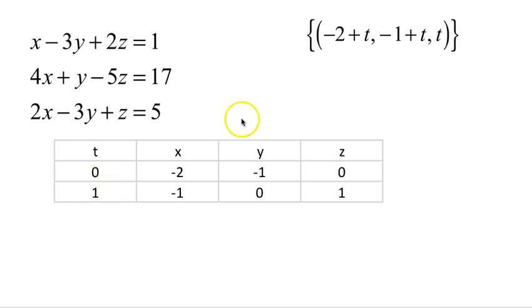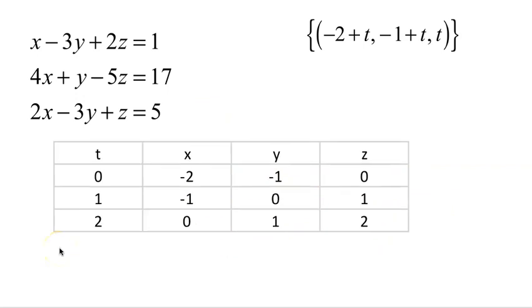But I could choose other values of t. If I choose t equals 1, negative 2 plus 1 is negative 1, negative 1 plus 1 is 0, and t is 1. So another point on the line of intersection for these three planes is (negative 1, 0, 1). I'll do one more. Let t equal 2. If t is 2, we get negative 2 plus 2 is 0 for x, negative 1 plus 2 is 1 for y, and t is 2 for z. So there are an infinite number of points that satisfy all three of these equations. I have listed three of them.